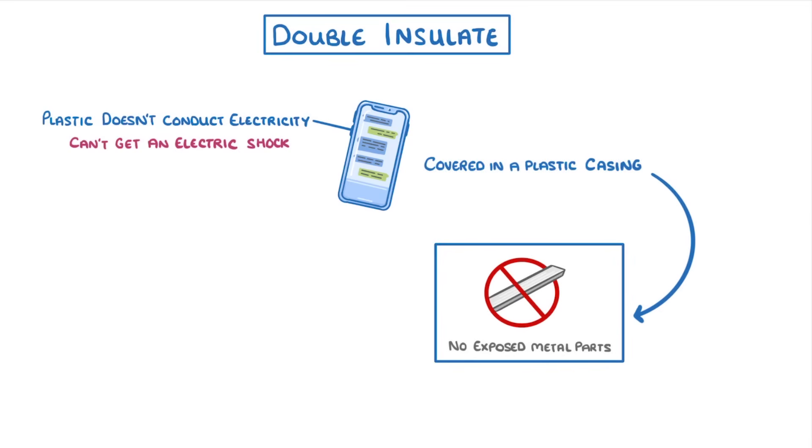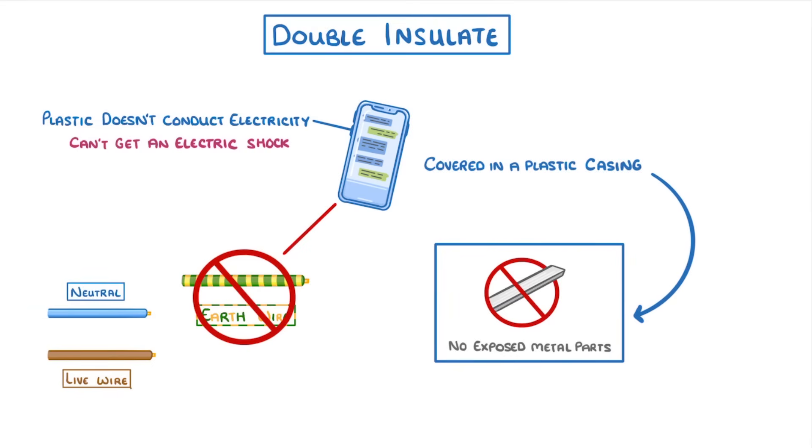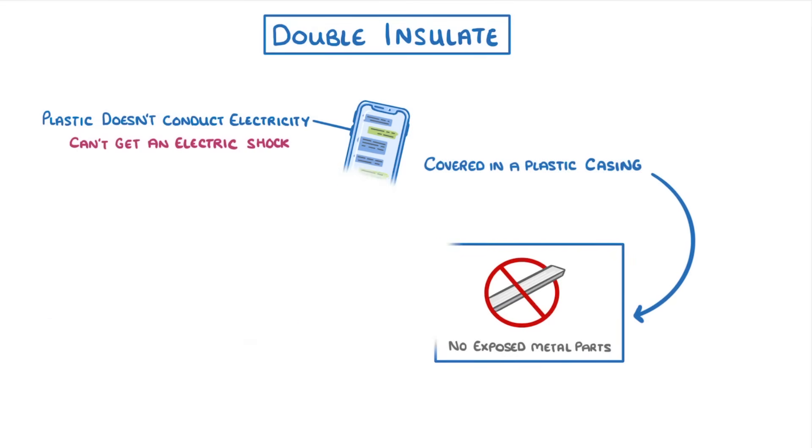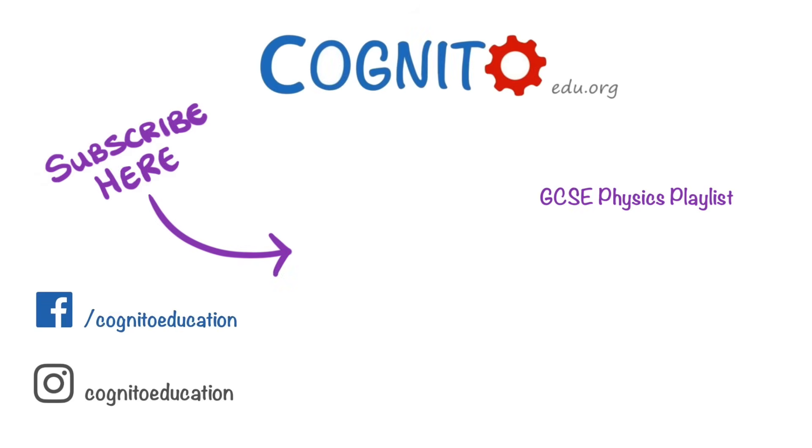In general, if an appliance has double insulation, then it won't need an earth wire, so it will just have a live and a neutral wire. Anyway, that's everything for this video, so hope you found it useful, and we'll see you next time.